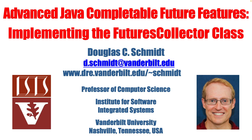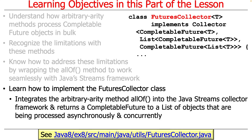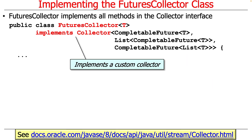Now that we've talked about designing the FuturesCollector, let's look at its implementation. The first thing to note is that FuturesCollector implements Collector, so it's basically a custom collector. It's parameterized by type T, making it a reusable wrapper class that can be used for all kinds of things, not just the example we're using it for in this case study.